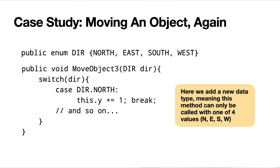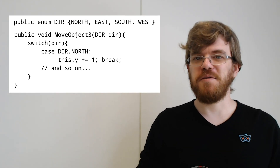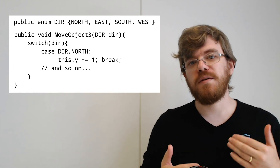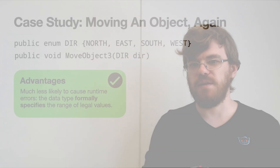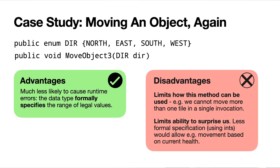There are ways around this. We could write another move object function using an enum — we define an enumerated type that describes directions and only allow it to have four values for the cardinal compass points. This allows us to write a new version of the move object method that only takes one of these enumerated type values. This reduces the number of possible ways to call the method from two to the sixty-four for every integer value, right down to four. We've added a little bit of specification, a little bit of formal restriction to the way this method is handled. The advantage for our AI system is that it's much less likely to cause runtime errors.